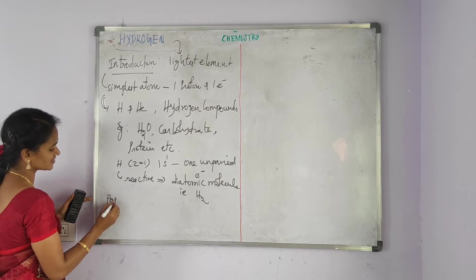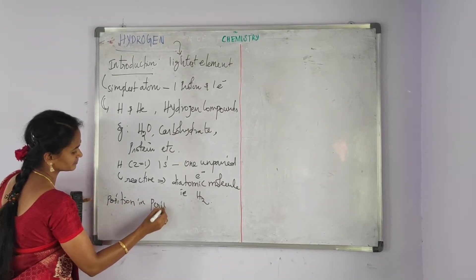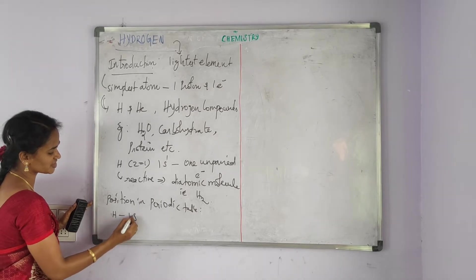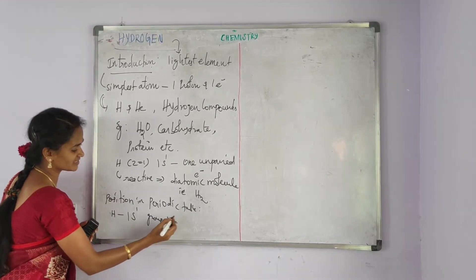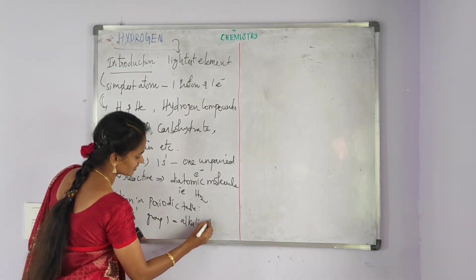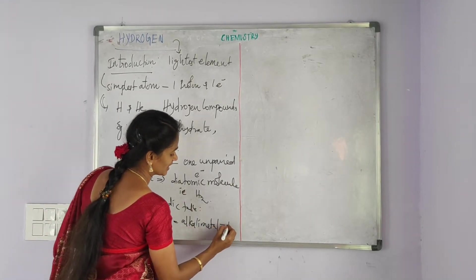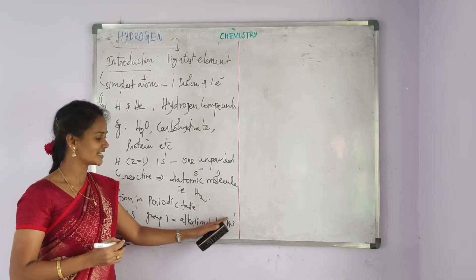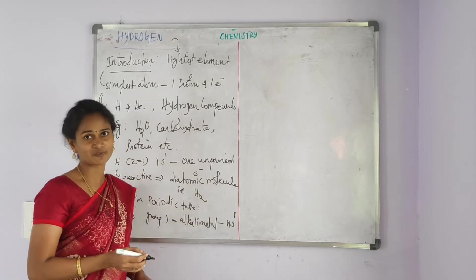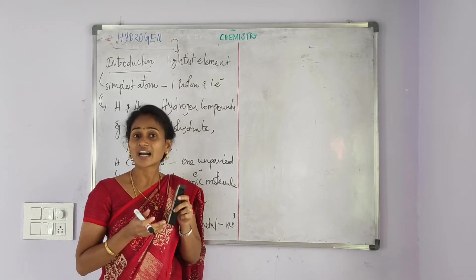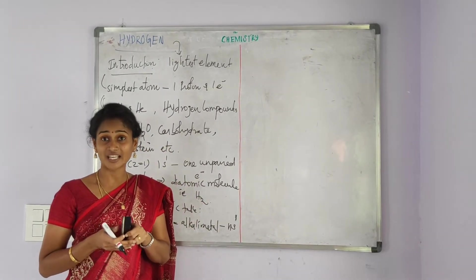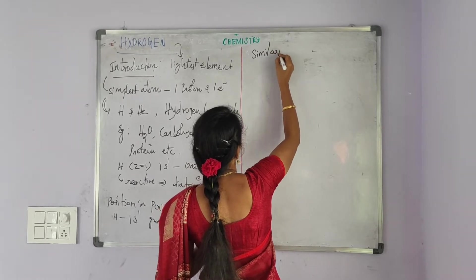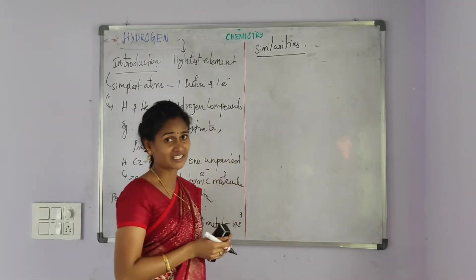Our next topic is position in the periodic table. Hydrogen's electronic configuration is 1s¹. Group 1 elements, that is alkali metals, have a general valence electronic configuration of ns¹. So the electronic configuration of hydrogen resembles the general valence electronic configuration of the alkali metals, and some properties of hydrogen resemble the properties of alkali metals.